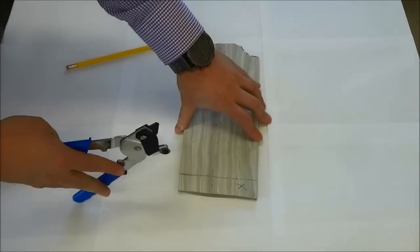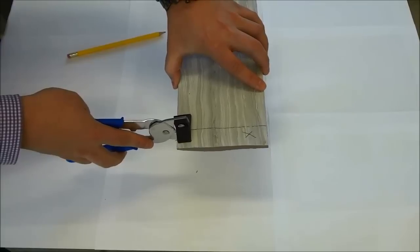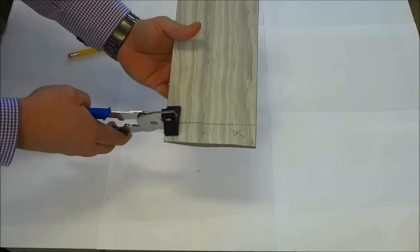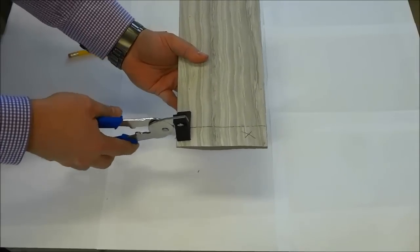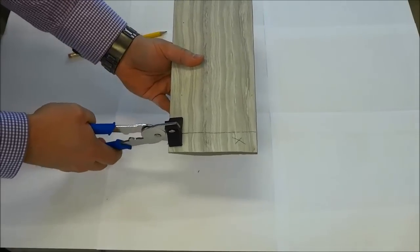Now once I've done that, I'm going to place the handheld tile cutter just like this along the edge of the tile. I'm going to hold one side of the tile and simply squeeze it together, and that should snap off the part of the tile that I want to cut.